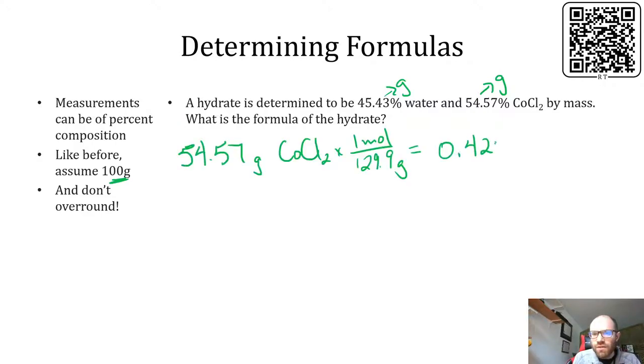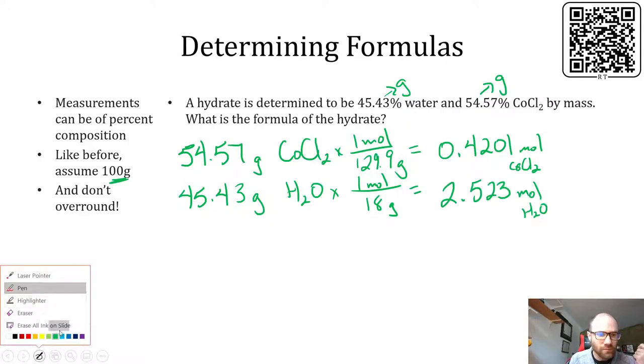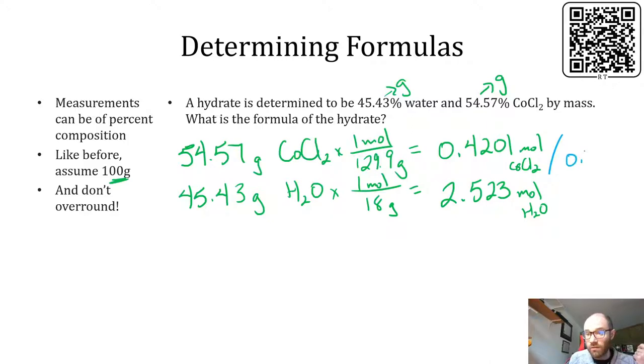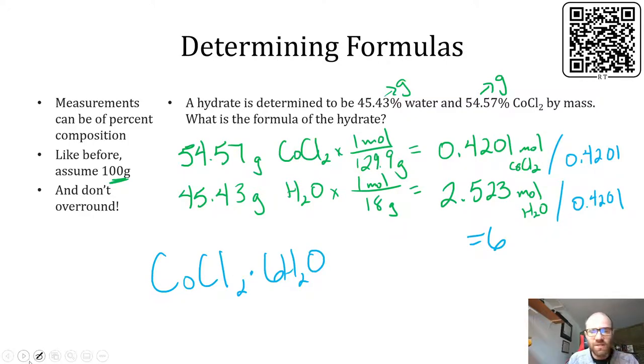This is 0.4201 moles of the anhydrous. And for the water, you'll see that over all these problems, the water step is always the same. You're always dividing by 18. You're just dividing by something different in the case of the anhydrous, of course. And then again, we divide by the smallest, or if you want to just say as a rule, the anhydrous moles of the ionic compound. And what you should get here is this is going to be equal to 6. Yeah, it's equal to 6.006, which is going to be a whole number. We're well within our rounding. So our final formula is COCl2 with a dot, 6H2O. So that's how you address these. You can go from measured masses or percentages all the way back to your chemical formula of your hydrated compound.